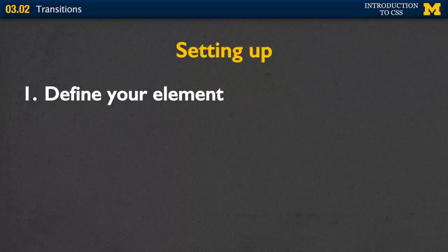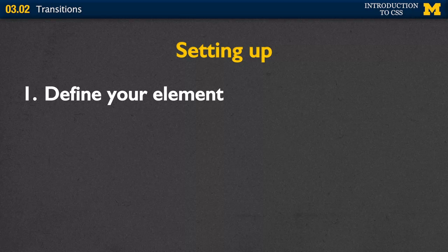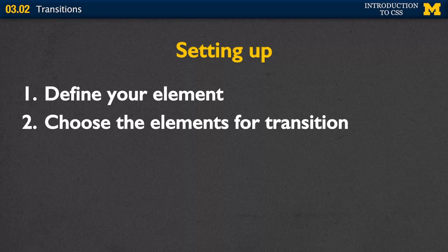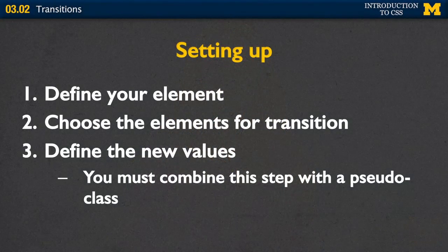If you want to use transitions, the first thing you need to do is define your element and specify what style you want it to have when the page first loads. Next, choose which properties you want to transition — you may have styled it with background color, color, width, and height, but you don't necessarily want to change all of them. So pick the ones you do want to change. Third, define the new values for those properties, and this is important: you need to combine this step with a pseudo-class — it needs to be along with a hover, focus, or active.